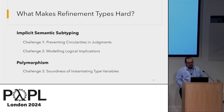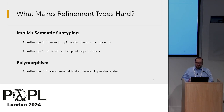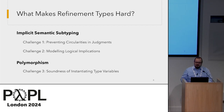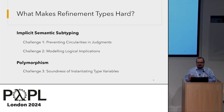In brief, the three challenges are: when formalizing implicit semantic subtyping, we ran into circularities in the judgments of our system; we'll talk about the challenges that arose in modeling our logical implications; and with polymorphism, we'll talk about challenges around instantiating type variables soundly and how this arises in our kind of system.